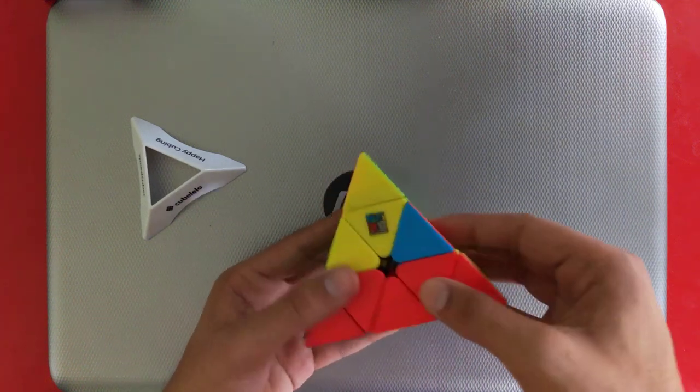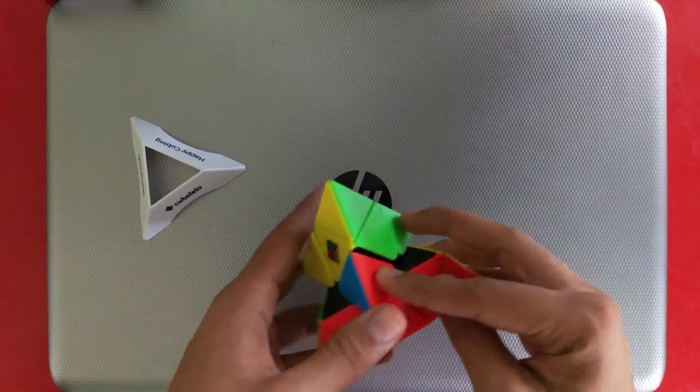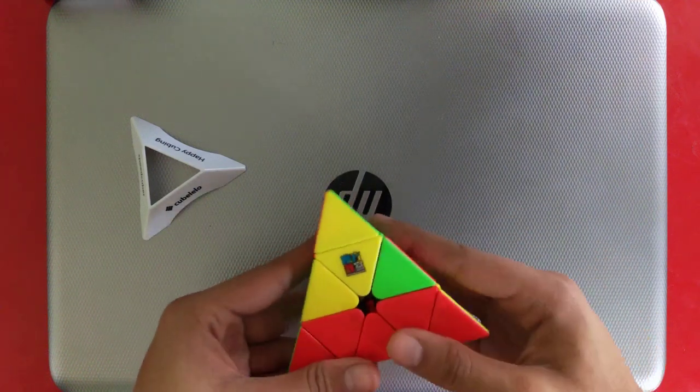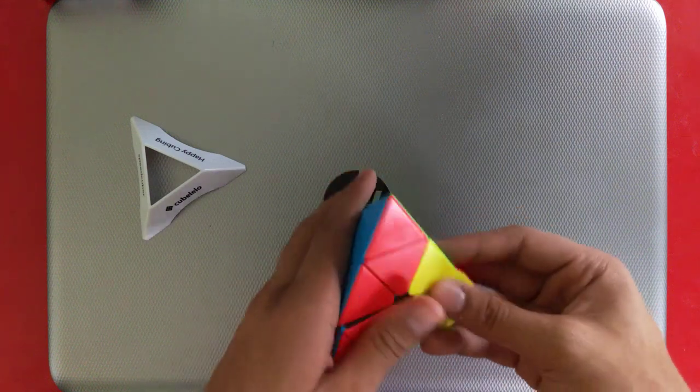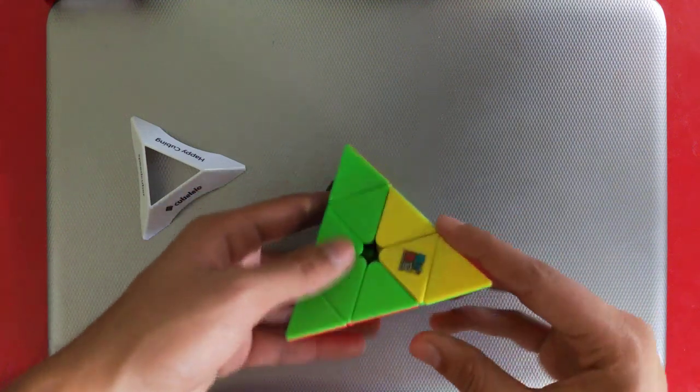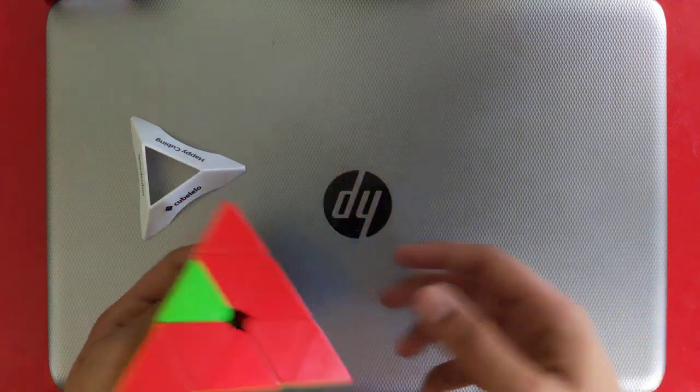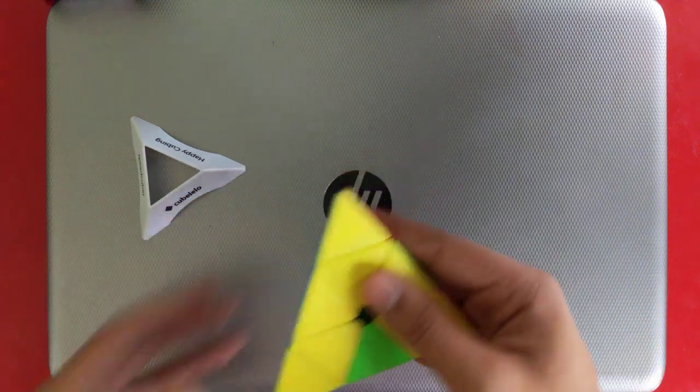Last part is this, and this will be going down here. As you can see, my one layer is solved from intuition itself. Now I can solve another layer, I can take some other layer as the base.